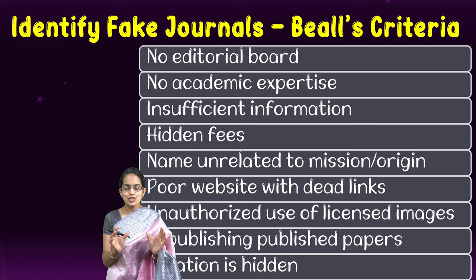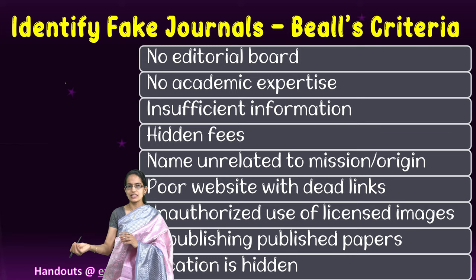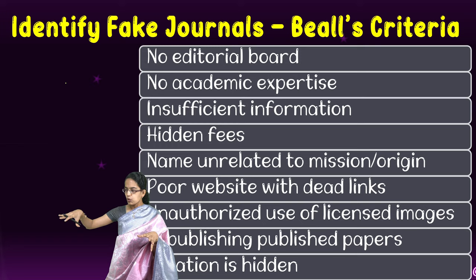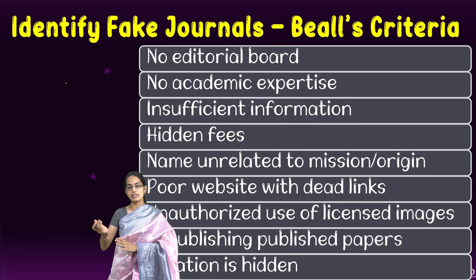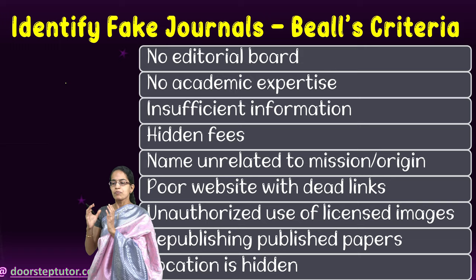There are interesting scenarios where the name of the journal is totally unrelated to the content or mission of the journal. For example, if a journal deals with electronics, the name should be related to electronics or science, but it may be something else. Similarly, the origin place of the journal and the name of the journal may be totally unrelated — which nation, region, or university it originates from is unclear. Poor websites and dead links give an indication that the journal is not well maintained.